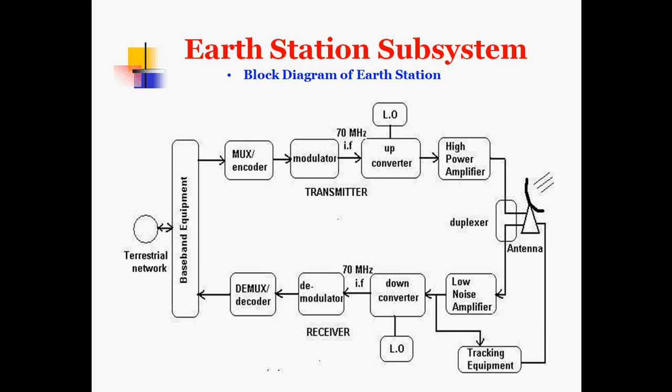The signals are then given to the high power amplifier and transmitted. On the receiver side, the same antenna is used for reception. The received signal is given to the tracking equipment and to the low noise amplifier, whose output goes to the down-converter with a local oscillator. The RF frequency is converted to intermediate frequency, then to the demodulator, demux or decoder, baseband equipment, and back to the terrestrial network.